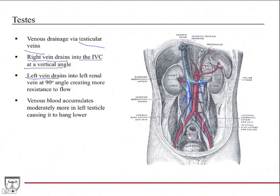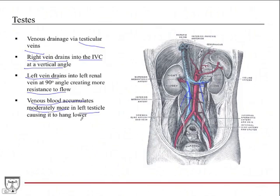This 90-degree angle creates more resistance to flow because blood has to travel directly against gravity. As a result, flow isn't as efficient on the left side, so venous blood accumulates more in the left testicle, causing it to hang a little bit lower than the right. There's slightly more weight due to this venous blood backup — this is a normal phenomenon resulting from normal anatomy.